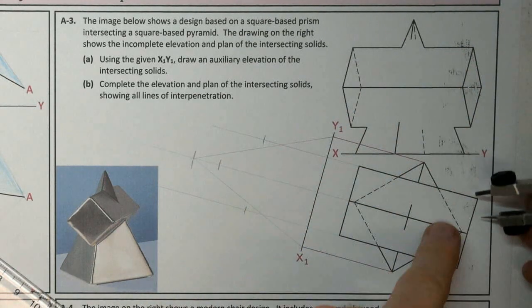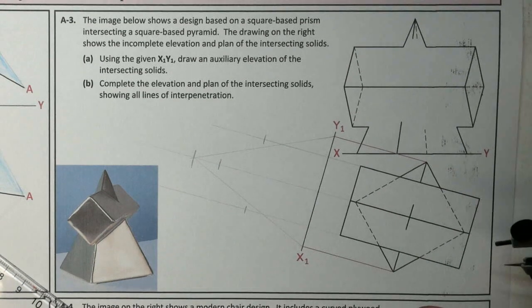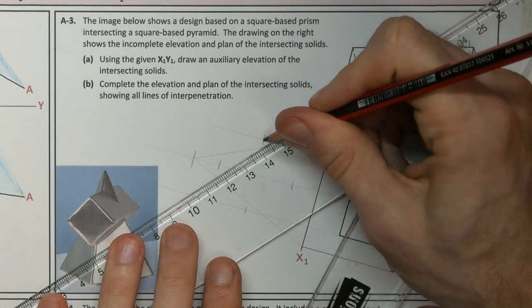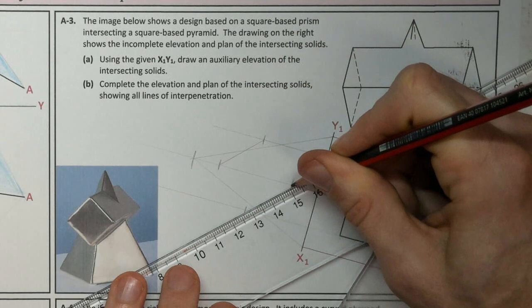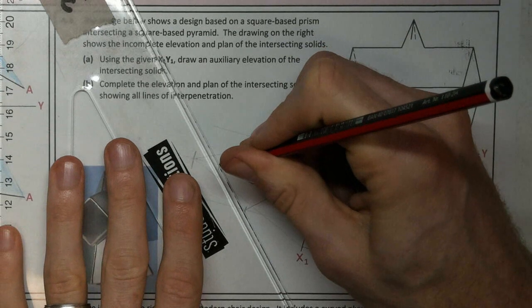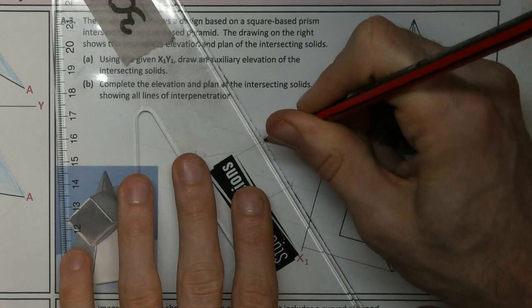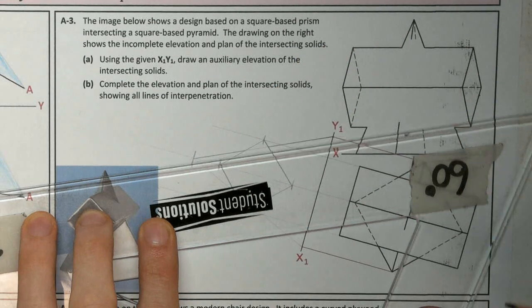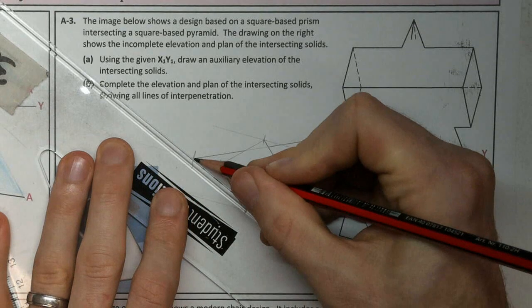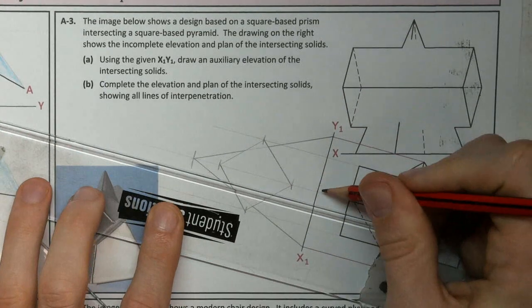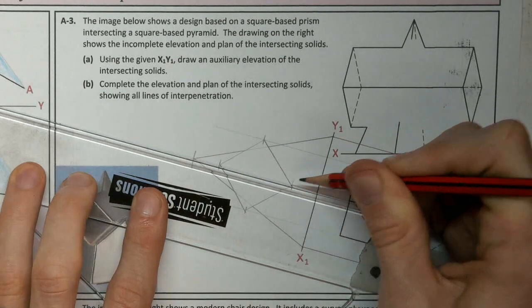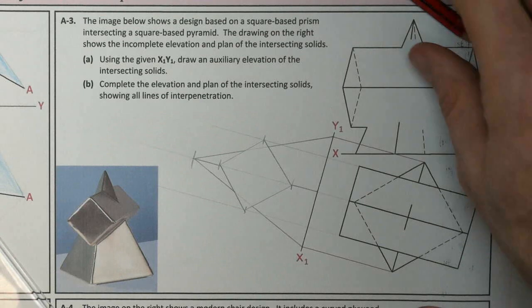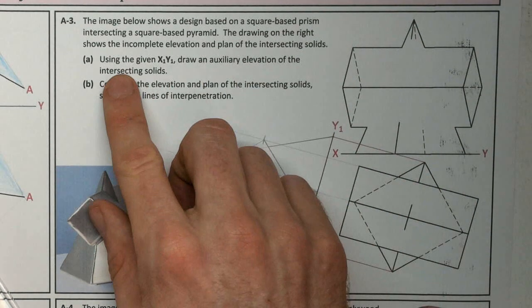If you're unsure of which one, just extend them down and see which edge they line up with. So I'll join my prism. Now I've located the auxiliary elevation. That's part A completed.